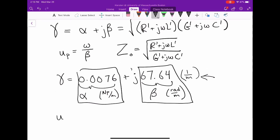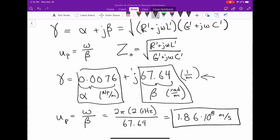Our phase velocity is ω/β, so we got 2π times 2 gigahertz divided by 67.64, and we end up with 1.86×10⁸ meters per second for our phase velocity.